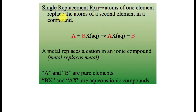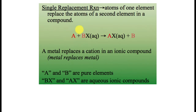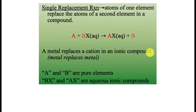The charges on these elements are going to change. A single replacement reaction is somewhat like a double replacement in that we're going to have two things react, and one element is going to replace another one in a compound. The way you identify these is that you always have an element reacting with a compound, and this compound is almost always going to be aqueous — typically a metal replacing a cation in an ionic compound.